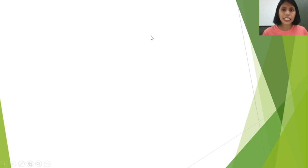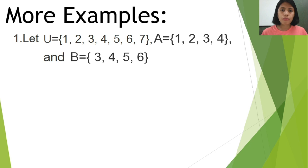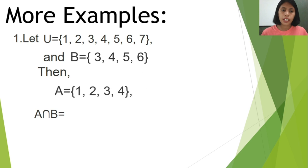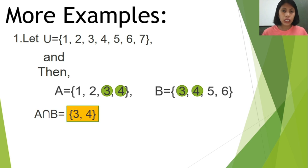Now let's have more examples. Let the universal set equal {1, 2, 3, 4, 5, 6, 7}, set A with elements {1, 2, 3, 4}, and set B with elements {3, 4, 5, 6}. We need to find the intersection of sets A and B. For intersection, we find the common elements of A and B, which are 3 and 4. Therefore, the intersection of sets A and B is {3, 4}.